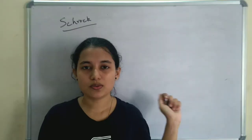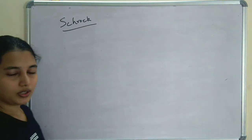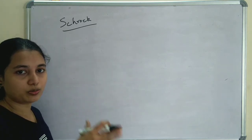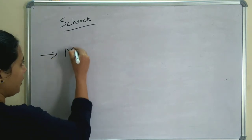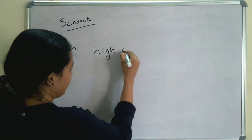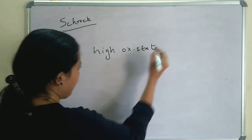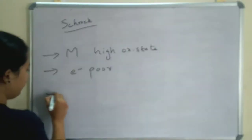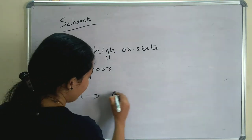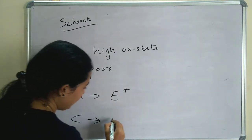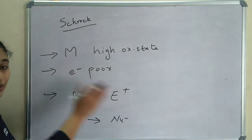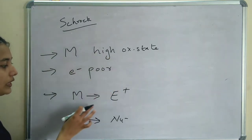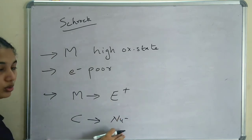Now let's move on to Schrock carbene. Schrock carbene is the opposite of Fischer carbene. Where Fischer carbene has the metal in a low oxidation state, in Schrock carbene the metal should be in a high oxidation state — the metal atom is electron poor. So the metal will be electrophilic in nature, and the carbene will be nucleophilic in nature — just the reverse of Fischer carbene.